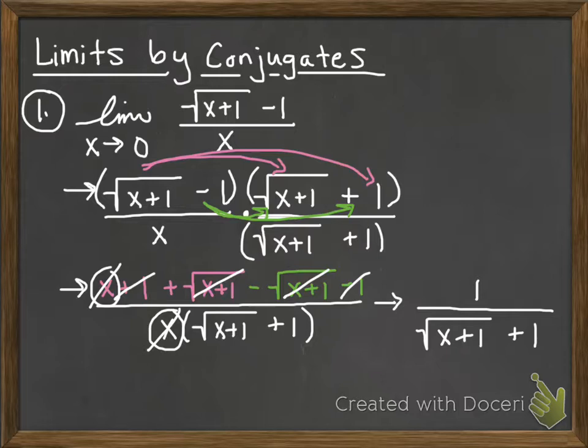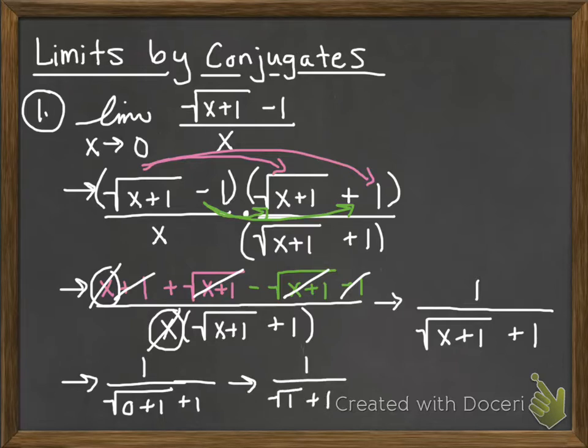Now that I did all my multiply by the conjugate, it's time to plug 0 back in to see if I get something that's a real number. I'm going to have 1 divided by the square root of 0 plus 1 plus 1. So that's going to yield the square root of 1 plus 1. The square root of 1 is 1 plus 1 is 2. So that is going to be my limit.